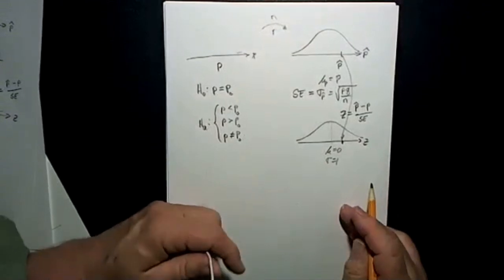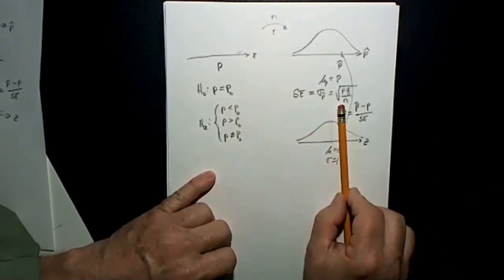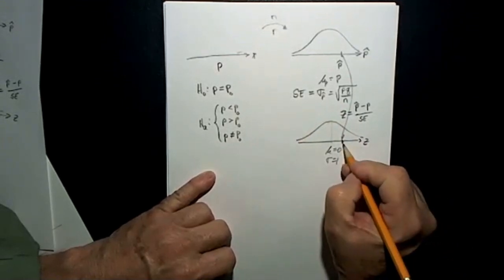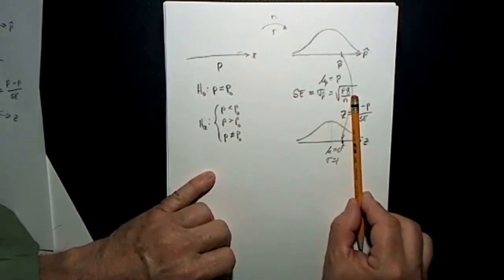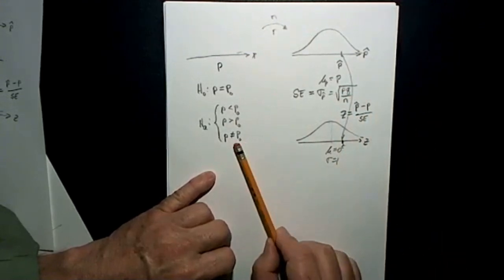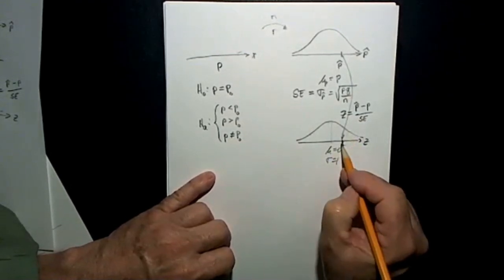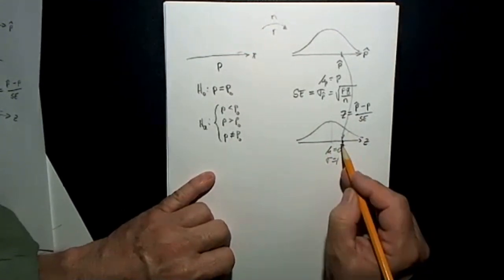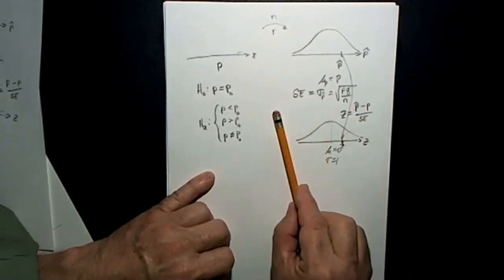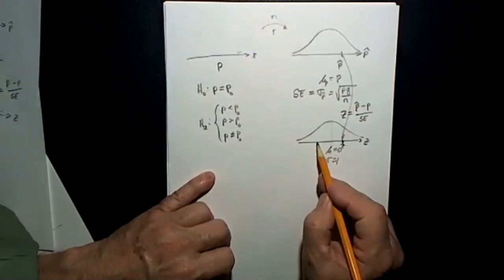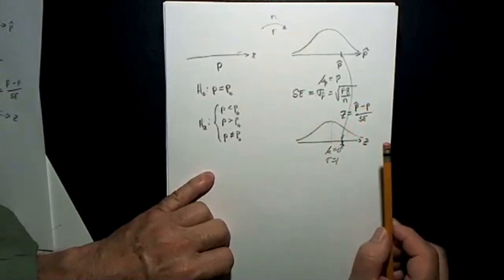The test is conducted by calculating the p-value. If it's a lower-tailed test, we find the area below that Z value. If it's an upper-tailed test, we find the area above that Z value. If it's a two-tailed test, it's a little more complicated: if the Z value is positive, we find the area above it and multiply by two; if the Z value is negative, we find the area below it and multiply by two.